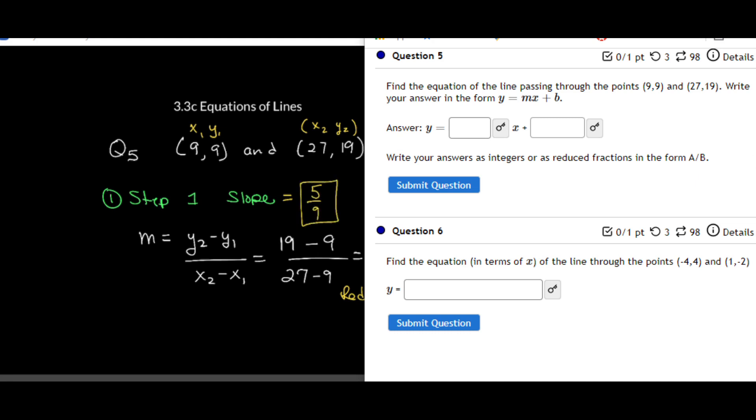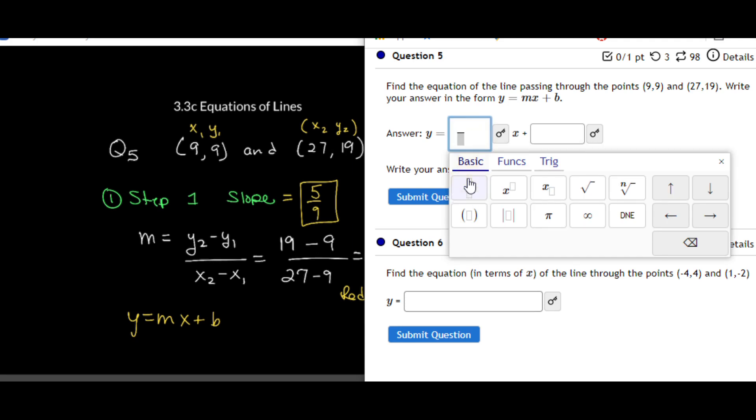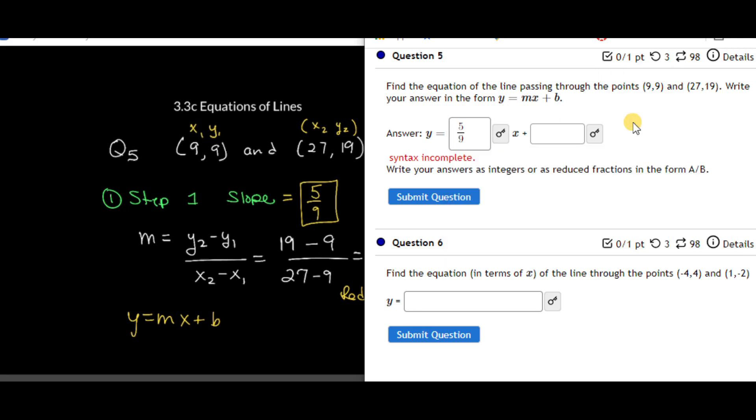And I'm going to go ahead and put that in. Now, where does that go? Remember, we're going for y is equal to mx plus b. So when they say that there's a box in front of the x, that's where you want to go ahead and put that in there. We're entering that as a fraction. That's going to be 5 arrow down over 9. Now, for this next piece inside here, that next blank, that is our b.